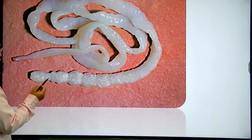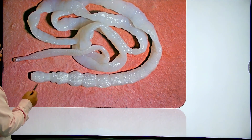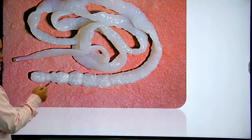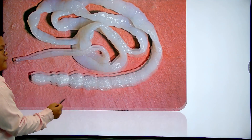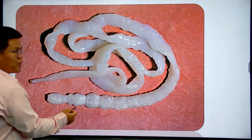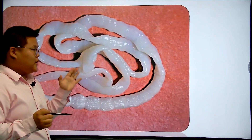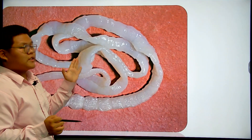Here you can see a tapeworm — these are all flatworms. These are the flatworm structures that you can see.